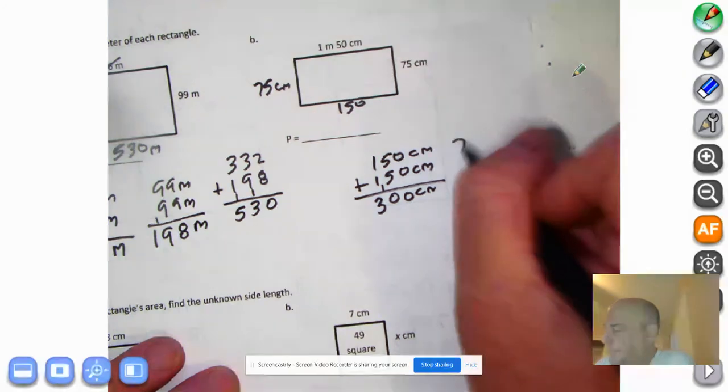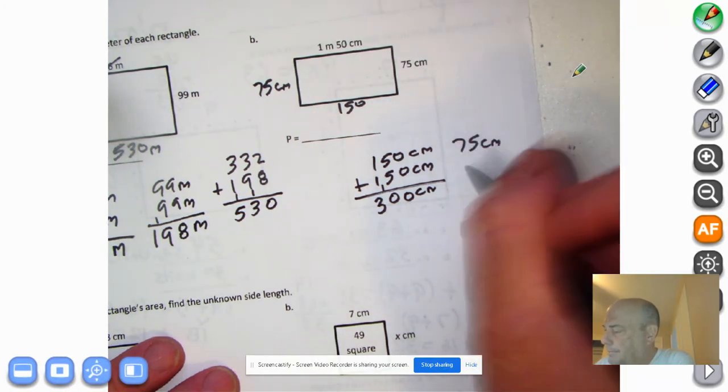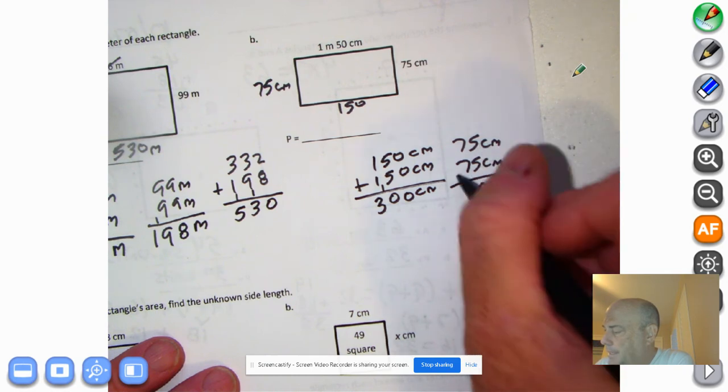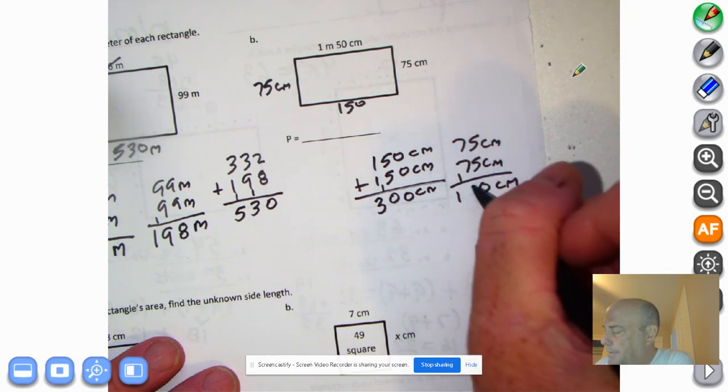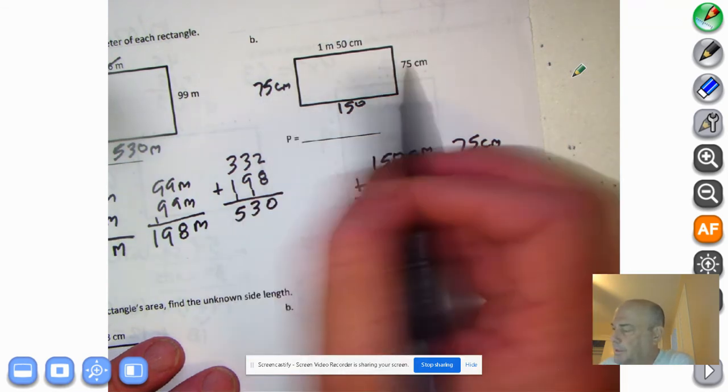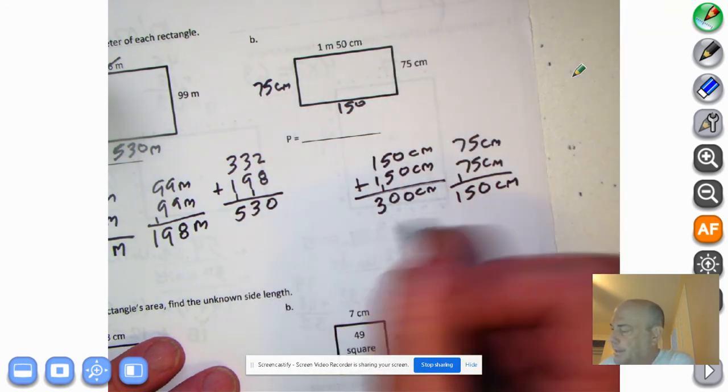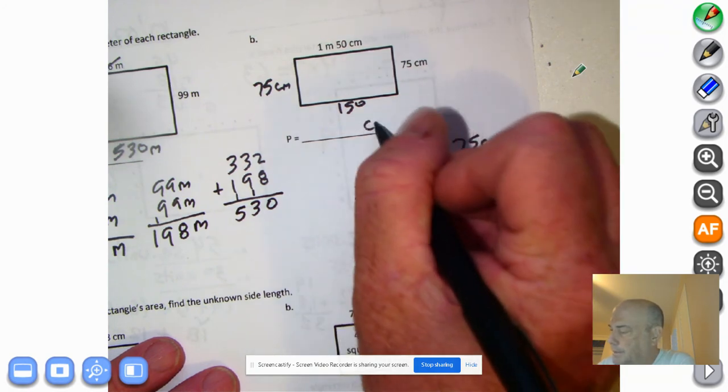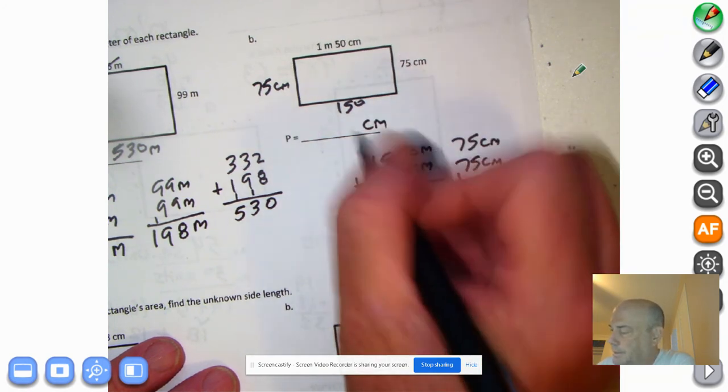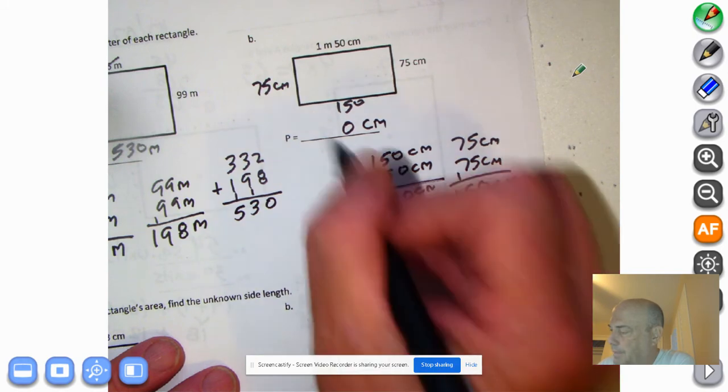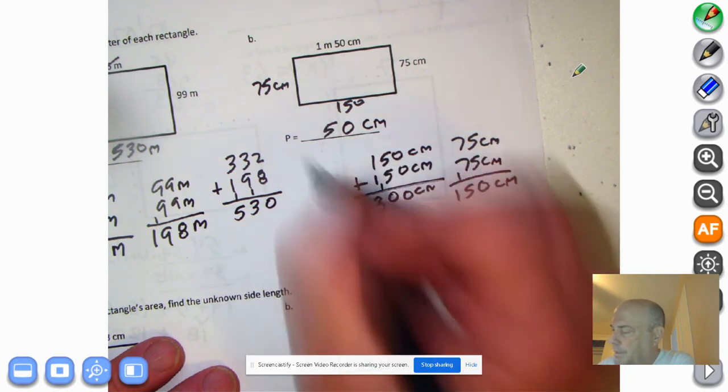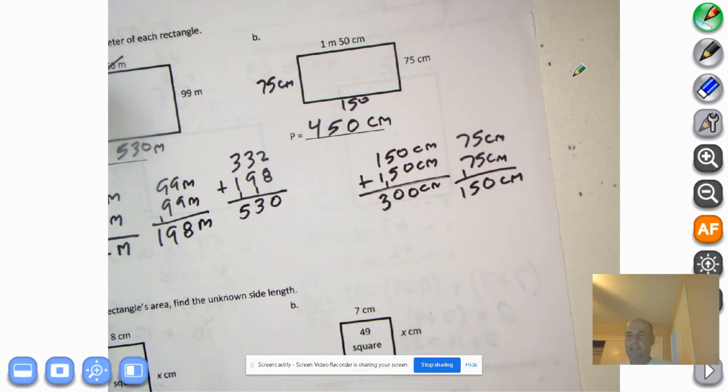Now over here we have 75, and here we have 75. So 75 plus 75. Bring down the unit of measurement. Five plus five is 10. 14 and 15. So 150 centimeters. So this plus this is 150. This plus this is 300. We can add them together. Let's just go like this. We're going to be centimeters. Zero plus zero is zero. Zero plus five is five. Three plus one is four. All righty.